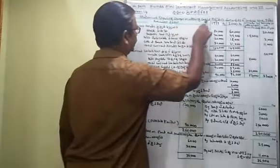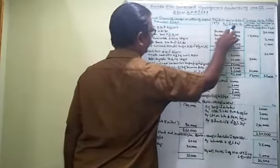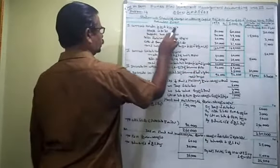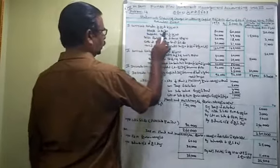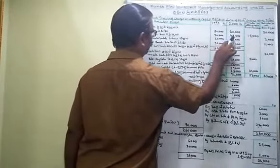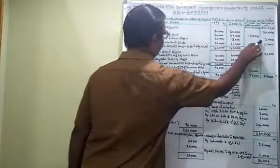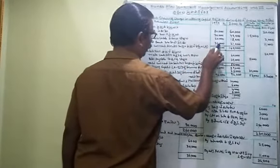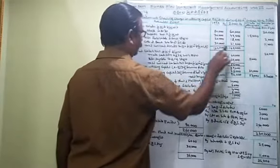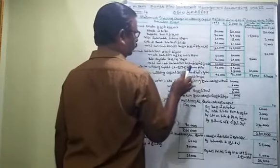So let us start the problem. First, the statement showing changes in working capital. We are ready to prepare for the statement. Particulars for 1999 and 2000. Current assets: stock is 1,99,000. The figure is 2,00,000. Another figure is 1,64,000.